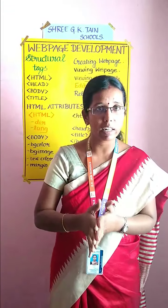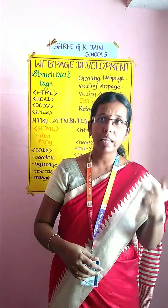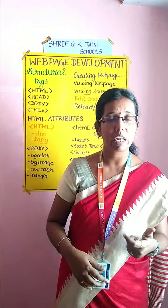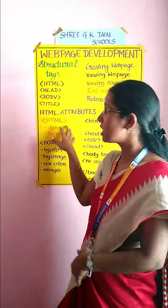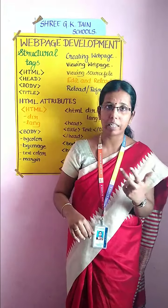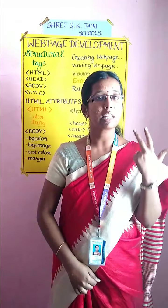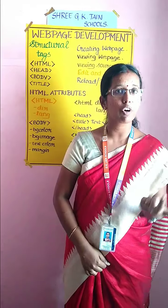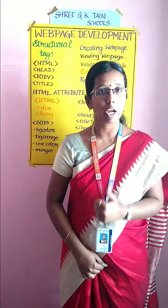If you are using any other language, you have to mention it — for example, Tamil is TA, Hindi is HI, Telugu is TE. Likewise, you have to mention the language in your HTML tag. So these are the two attributes in your HTML tag: DIR stands for direction and LANG for language.